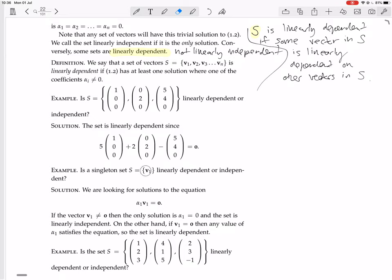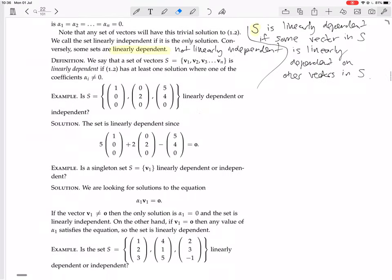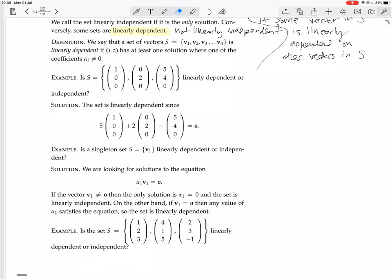Another question. Is a singleton set V1 linearly dependent or independent? So you should think about that yourself. We are looking for solutions to the equation A1V1 equals zero. If the vector V1 is not equal to zero, then the only solution is A1 equals zero, and the set is linearly independent.